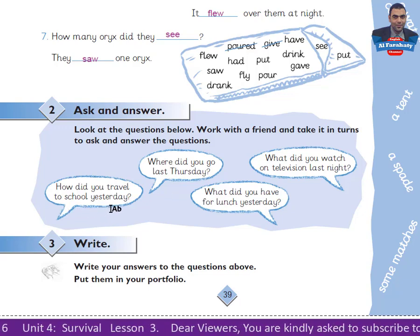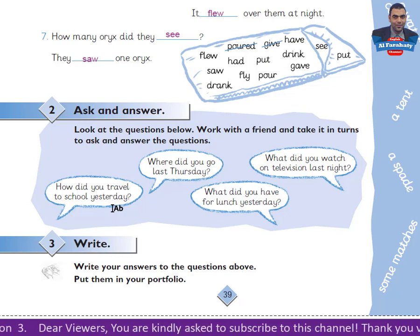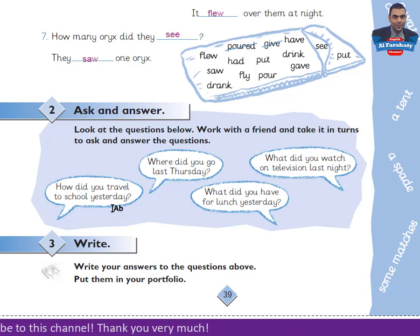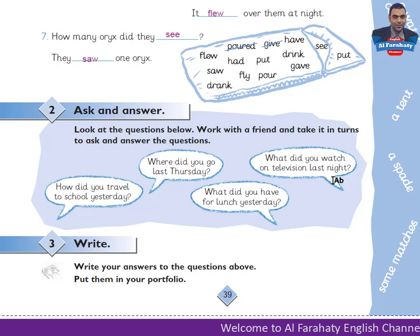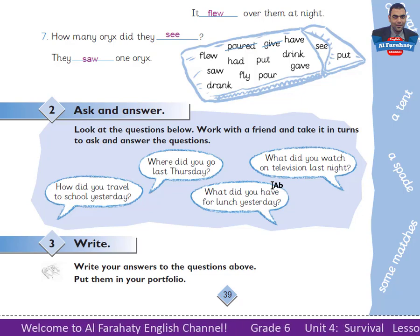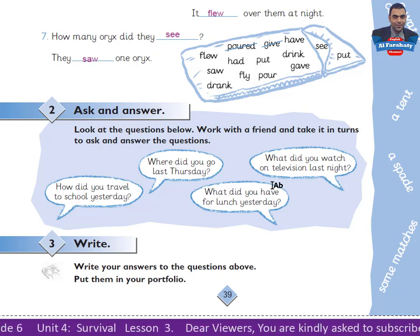How did you travel to school yesterday? You can say: I went to school by bus, by car, on foot, and so on. Where did you go last Thursday? You can say: I went to Ibri, I went to Muscat, and so on. What did you have for lunch yesterday? I had Sahna, I had cheese, I had meat and fish, and so on. What did you watch on television last night? I watched a film, I watched the news, and so on. You can take it in turn to ask and answer these questions with your friend.